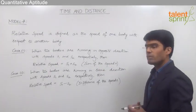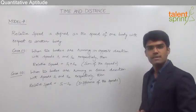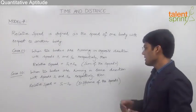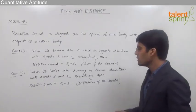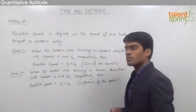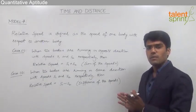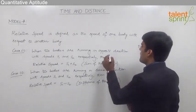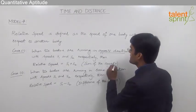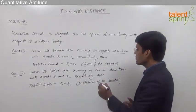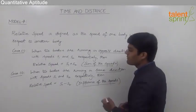Case two is when the two bodies are running in the same direction. When two bodies run in the same direction with speeds s1 and s2, the relative speed is equal to s1 minus s2, that is the difference of the speeds. So whenever two bodies run in opposite directions the relative speed is the sum of speeds, and whenever they run in the same direction the relative speed is the difference of their speeds.